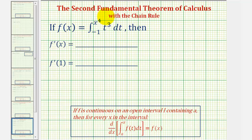Welcome to an example of the second fundamental theorem of calculus that also requires a chain rule. Here we're given f of x equals this integral and asked to find f prime of x and f prime of one. One approach would be to find f of x by integrating and then find f prime of x by differentiating.